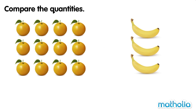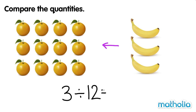Let's compare the number of bananas to the number of oranges. Three divide twelve equals one quarter. The number of bananas is one quarter the number of oranges.